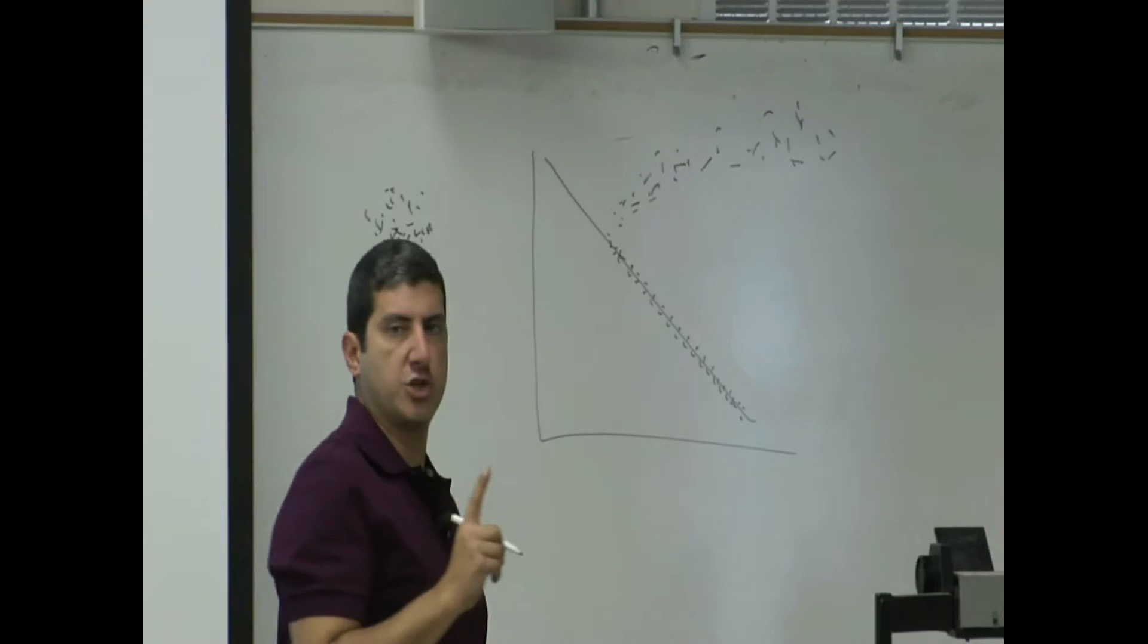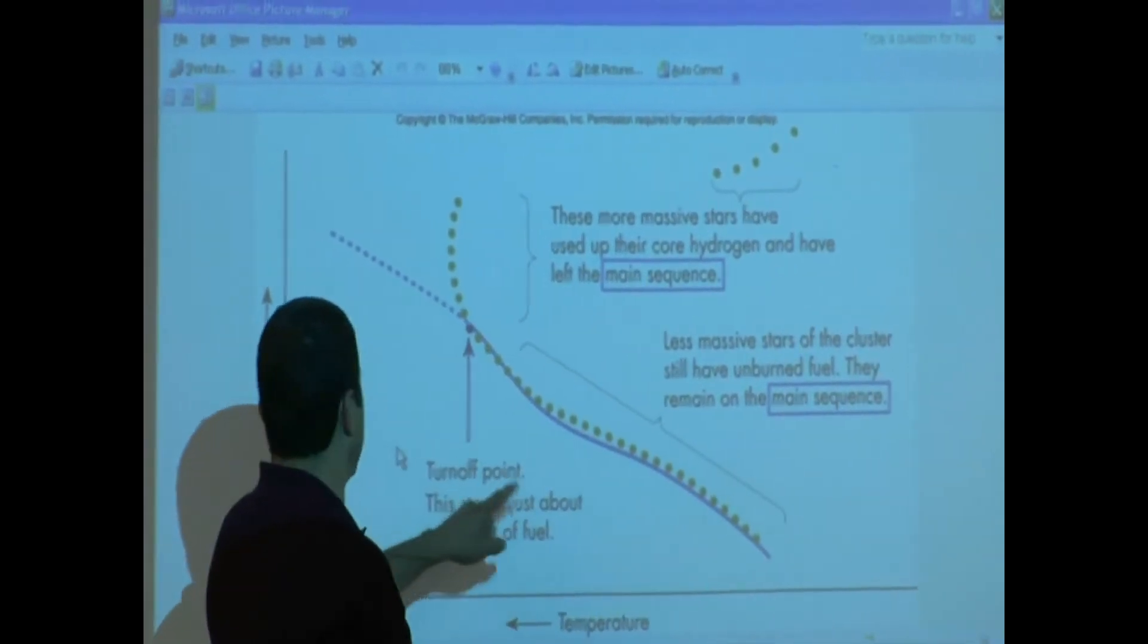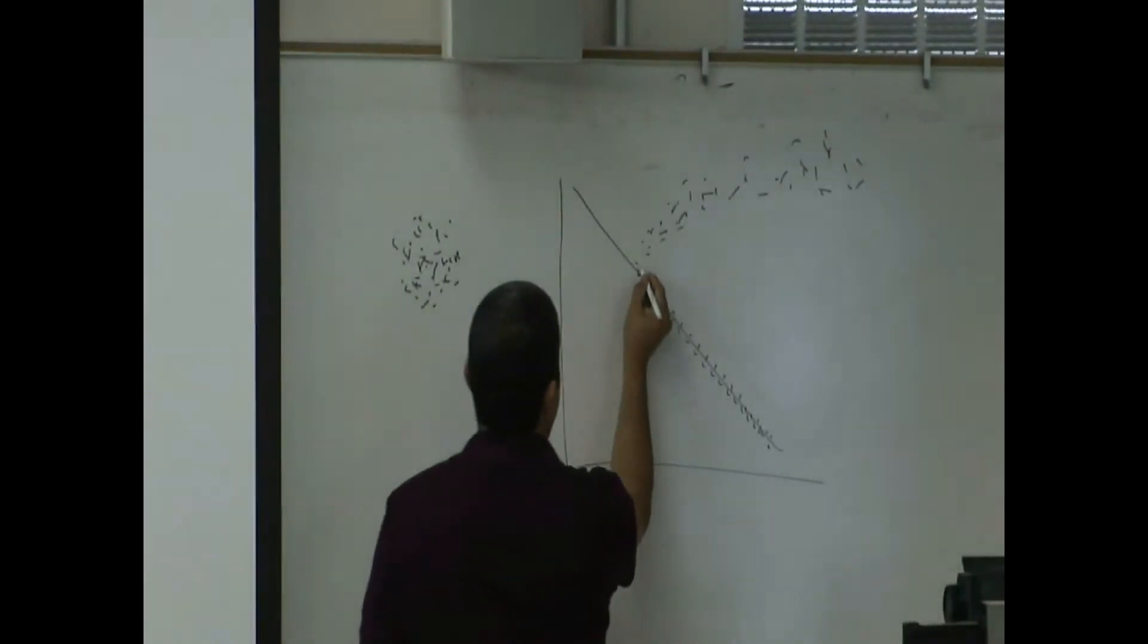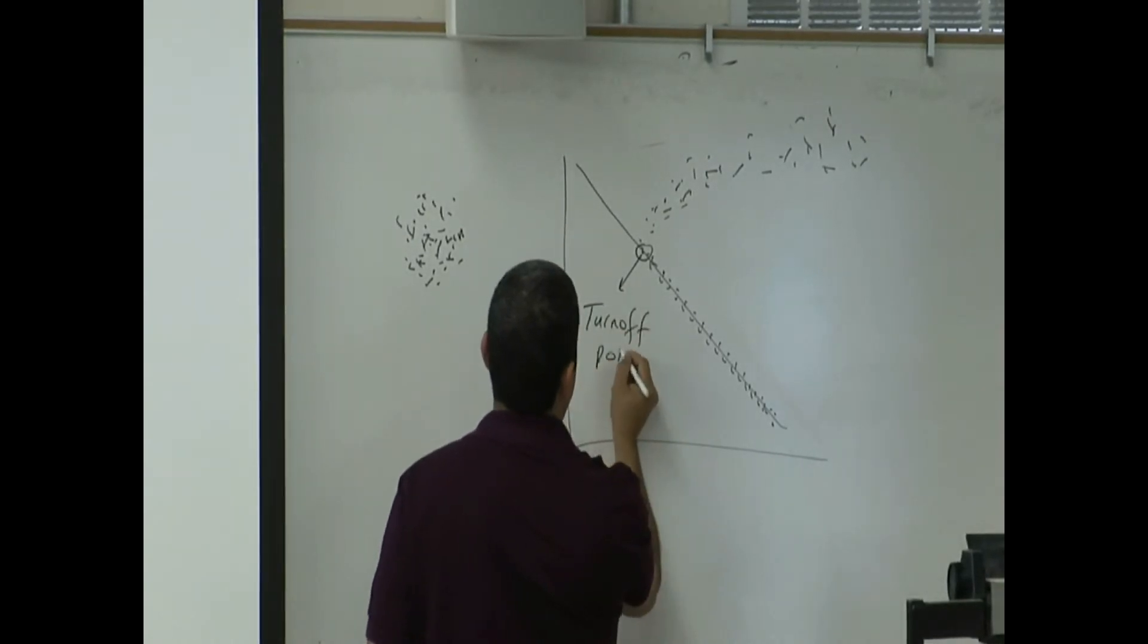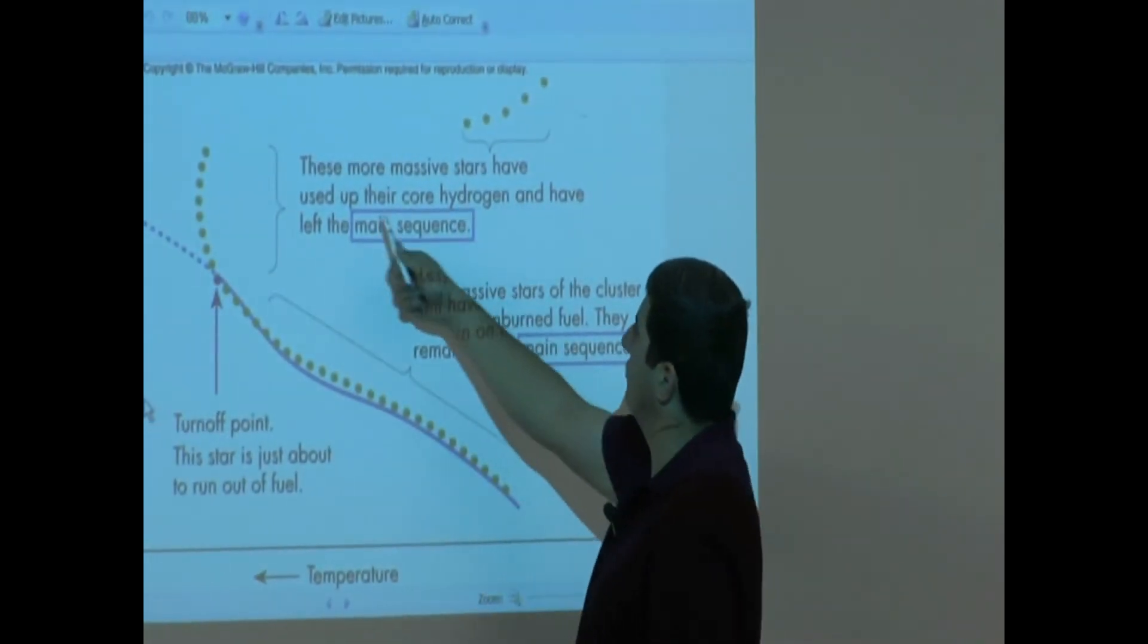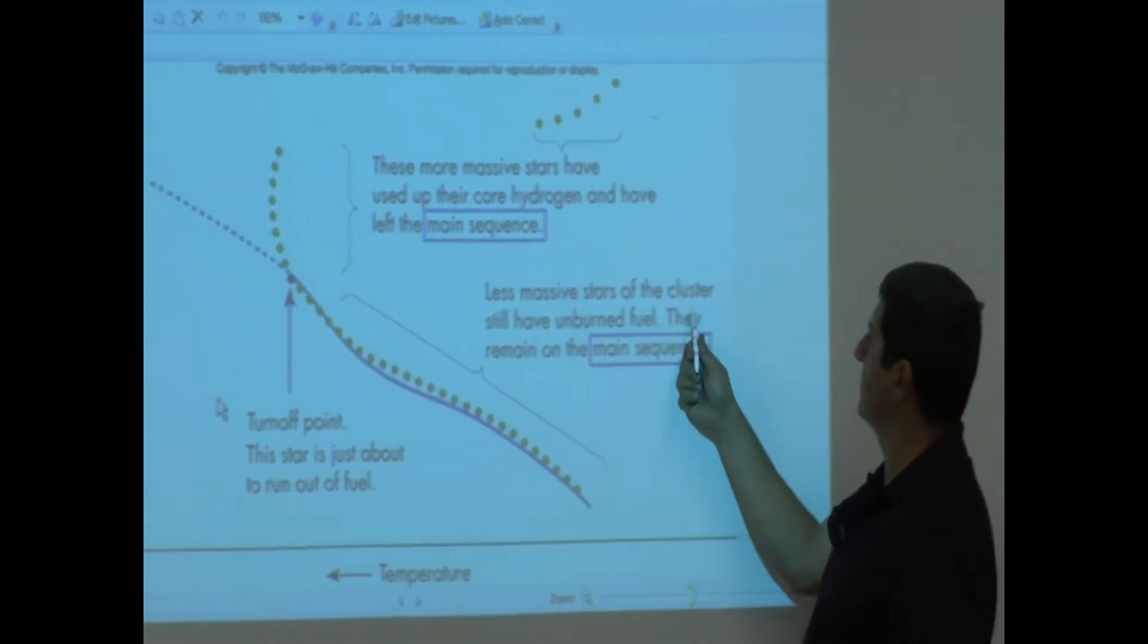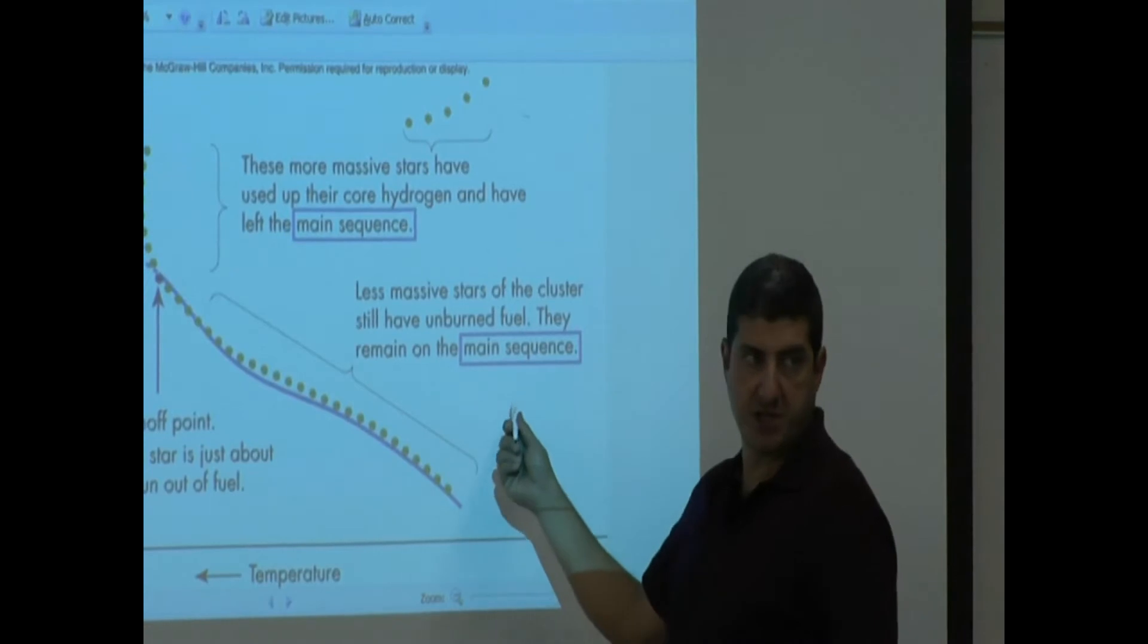This star is just about to run out of fuel. So this is the turnoff point. These more massive stars have used up their core hydrogen and have left the main sequence. You see these guys here and then also these guys. Less massive stars of the cluster have unburned fuel. They remain on the main sequence still.